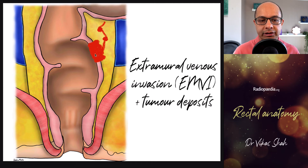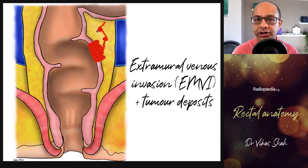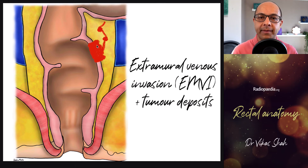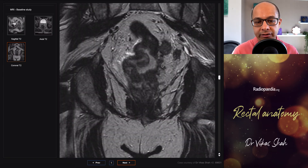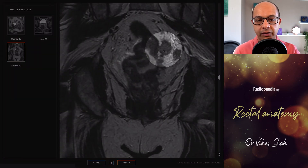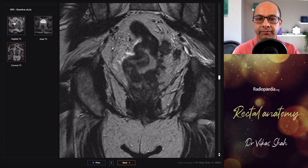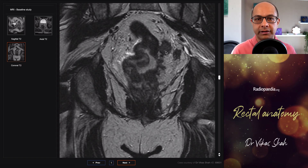Another important aspect is tumor extending out of the rectal wall into local vessels — known as extramural venous invasion — potentially leaving small deposits of tumor tissue along the way, called tumor deposits. There has been increasing awareness of the importance of these two entities, as they increase the rate of metastatic disease and local recurrences from rectal cancer. On imaging you'd see tumor extending in a serpiginous fashion along the vessel, with a small deposit along the way. Importantly, tumor deposits interrupt the path of vessels whereas lymph nodes do not — that's how you differentiate between them.